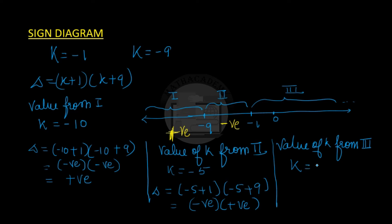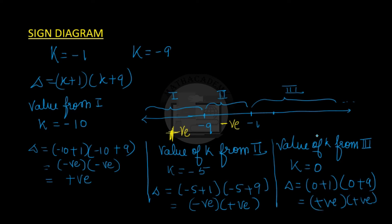From part 3, take k equals 0. Delta equals (0 plus 1)(0 plus 9): positive times positive gives a positive result. So the sign diagram shows: positive in part 1, negative in part 2, and positive in part 3. At the boundary points minus 9 and minus 1, delta equals 0.